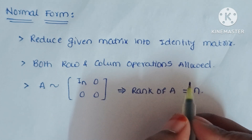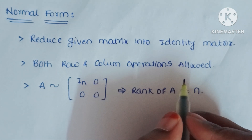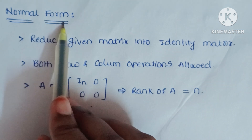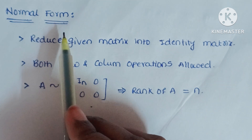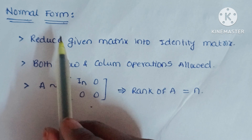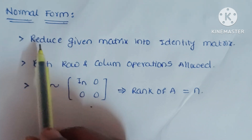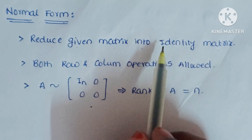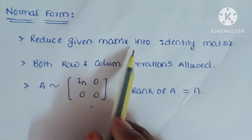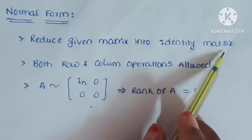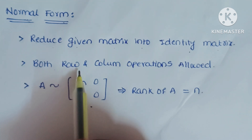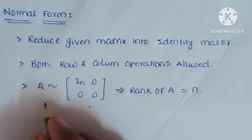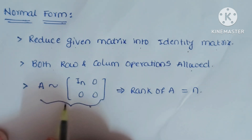Hi friends, welcome to my channel NM Learn — Make Courses with Nagamani. Today we are going to find the rank of the matrix using normal form. In normal form, we have to reduce the given matrix into an identity matrix. While converting the given matrix into an identity matrix, we can use both row and column operations. This is the symbolic representation of normal form.